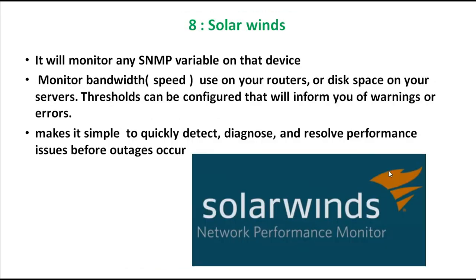The next one is called SolarWinds. It monitors any variable on a device — it monitors the bandwidth you are using on a router or the disk space on your server. Thresholds can be configured and it will inform you with a warning or error, making it simple to quickly detect issues and resolve problems before they overflow. It gives information about the speed of your router, bandwidth, how much space is left on the server, and warns you when something is going to cross the limits.